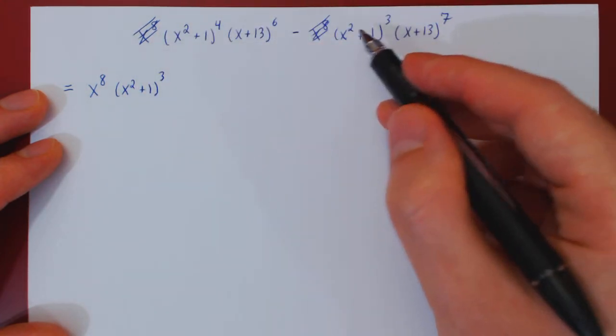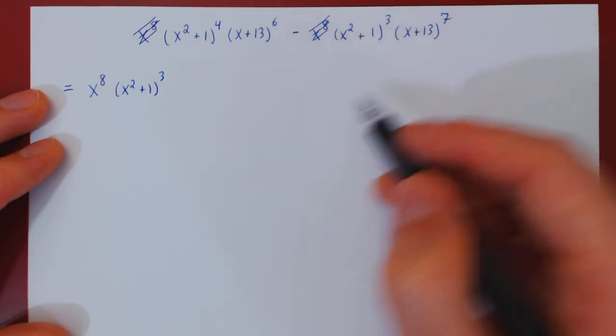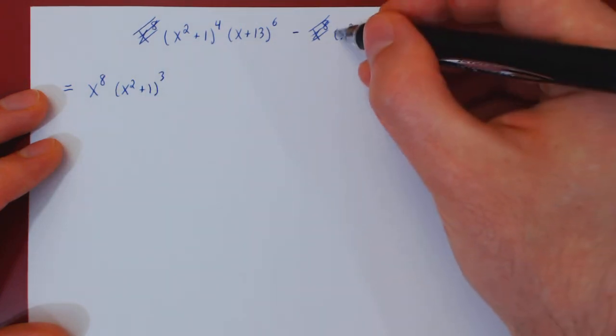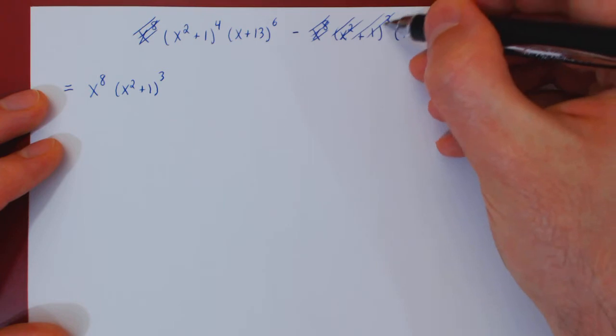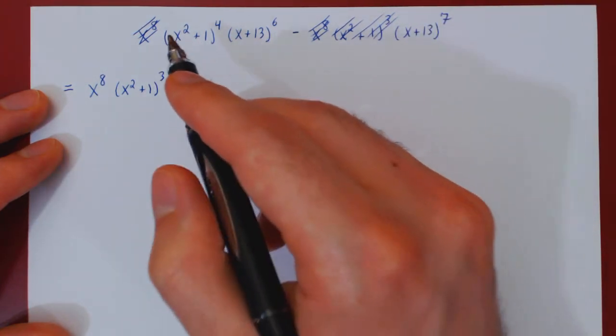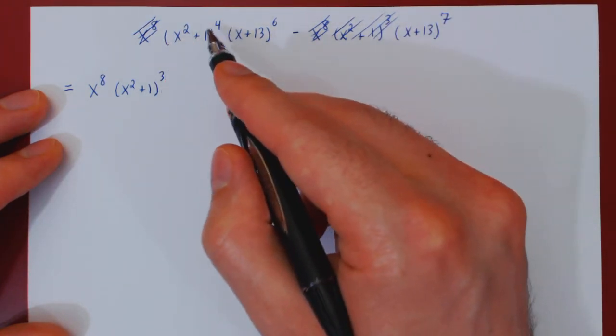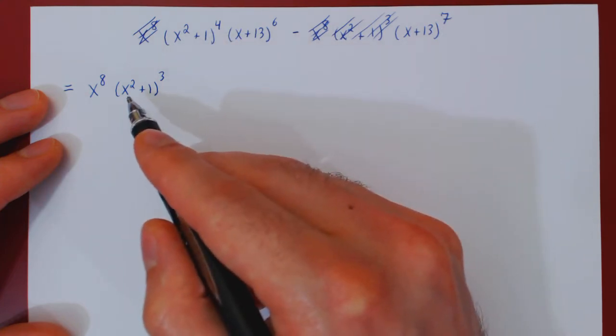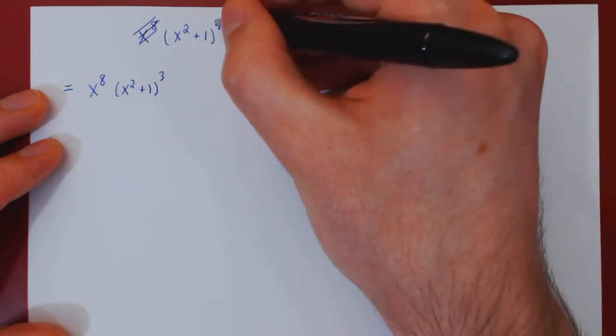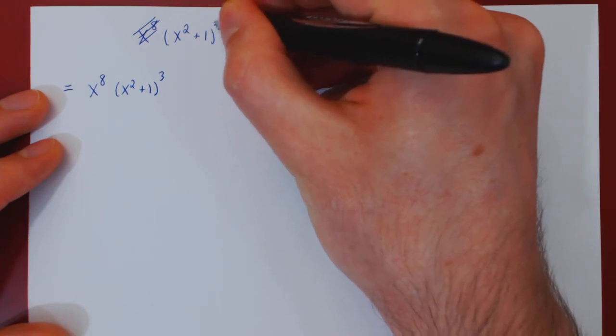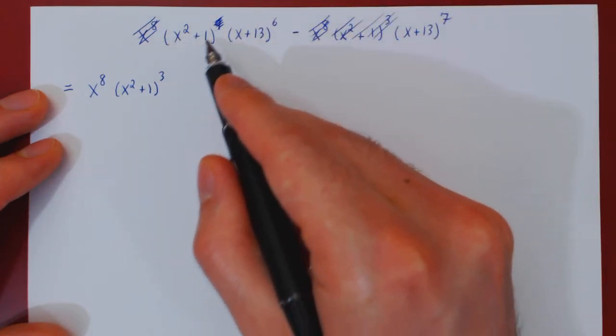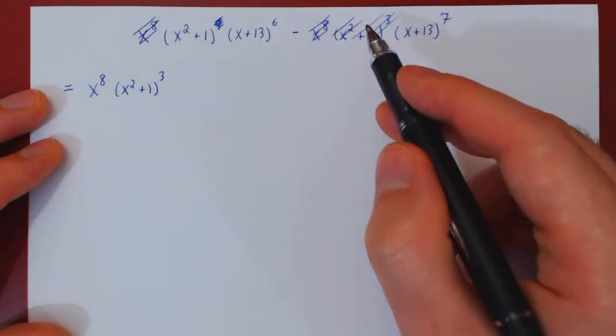Well, here, in the second term, there were exactly 3 of those terms. We factored all of them, so there's nothing left of this term. We have to be careful, though, in the first, there were 4 factors of x squared plus 1. We took away only 3, so therefore there's 1 left over. So we have a remaining x squared plus 1 factor in the first term, but not in the second.